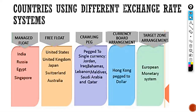So these were a few countries as examples of different exchange systems. Under Managed Float: India, Russia, Egypt, and Singapore. Under Free Float: United States, United Kingdom, Japan, Switzerland, and Australia. Under Crawling Peg: Jordan, Iraq, Maldives, Qatar, and Saudi Arabia. Under Currency Board Arrangement: Hong Kong. And lastly, under Target Zone Arrangement: the European Monetary System.